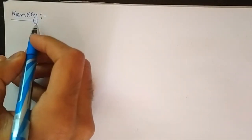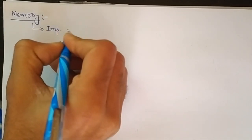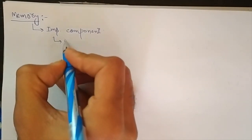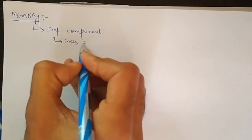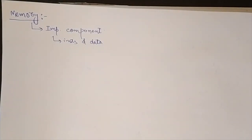Today's lecture is regarding the discussion on memory. Memory is one important component in microprocessors. In all processors, and especially in microprocessors, memory is used to store both the instructions and data. Whatever instructions we want our processor to execute, and the data on which those instructions are to be executed — both the instructions and data are stored in the memory.